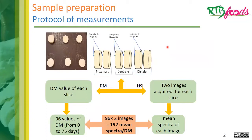Each tuber is peeled, cleaned, and divided into six slices of the same size — two proximal, two central, and two distal. For each slice, two hyperspectral images were acquired, and for each image a mean spectrum is calculated. For dry matter measurement, one value is calculated per slice, making a total of 96 dry matter values from 0 to 75 days of storage, and 192 mean spectra overall.